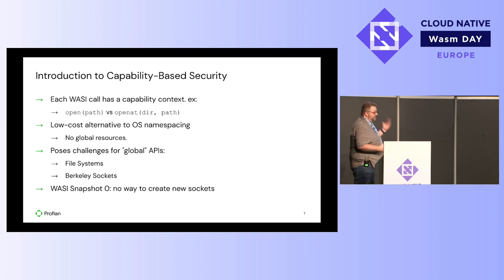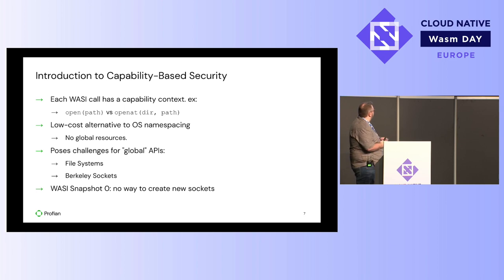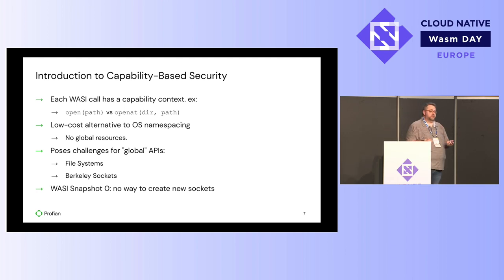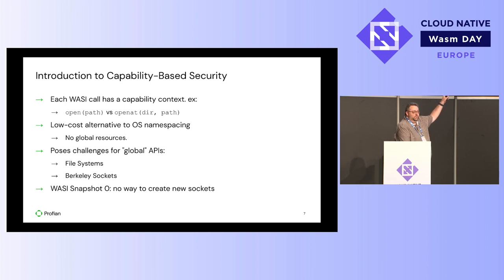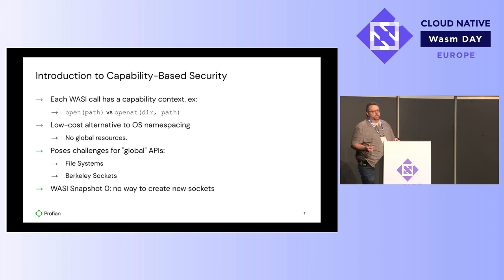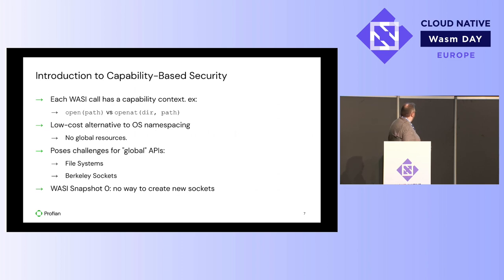This poses particular challenges for the global APIs that we know and love, particularly in the networking world where you're typically used to having a global view of network addresses. When trying to do capability-based security in WASI, that's not a great fit. It's not just Berkeley sockets — it's also file systems. We've solved this pretty efficiently using openat. But even today in Rust's standard library, there's no primitive for operating on open directories, so even though the underlying OS provides openat, the Rust standard library provides no way to actually access it.